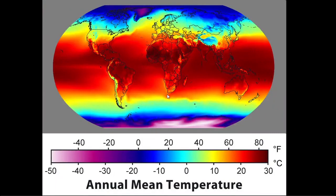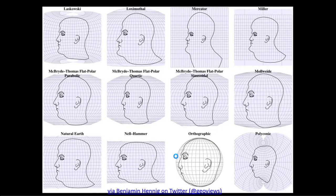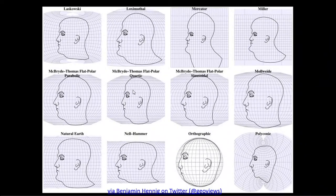An isotherm map shows all areas sharing the same annual mean temperature — deep red areas are around 80 degrees and blue areas are in the 20s. An isohyet map shows rainfall using isolines. These are additional examples of isoline maps showing continuous surface data.